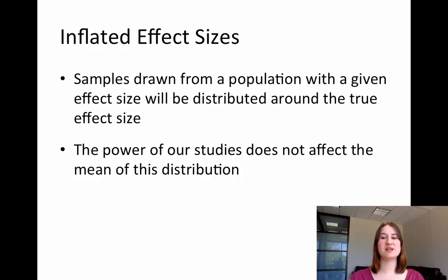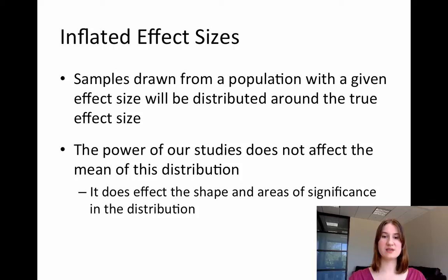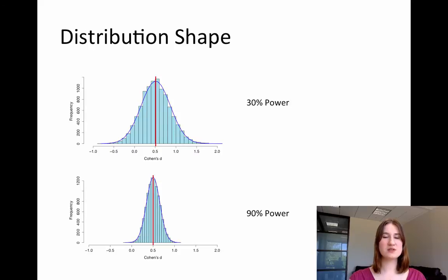The power of a study is not going to affect the mean of that distribution. No matter what the power, the mean should always be around 0.5, because that's my true population value. However, it is going to affect two very important things: the shape of the distribution and the areas of that distribution where the Cohen's d's would be statistically significantly different than zero.